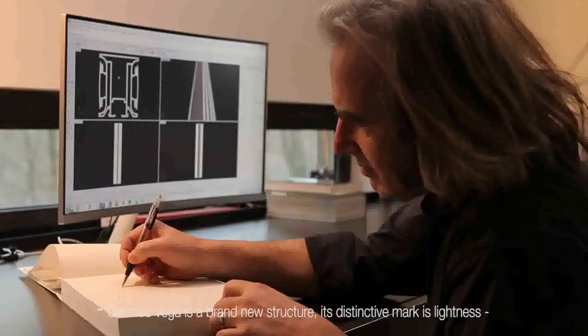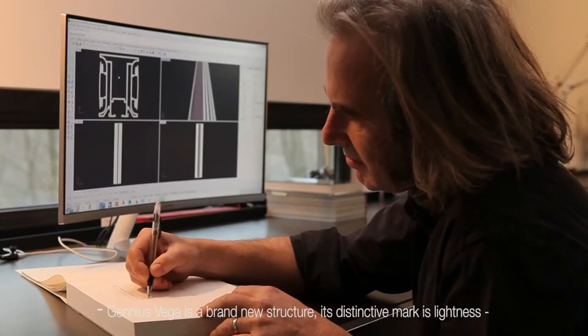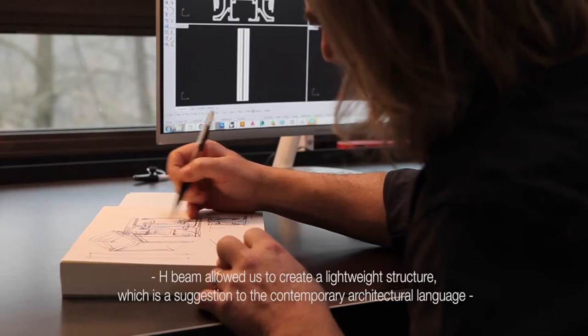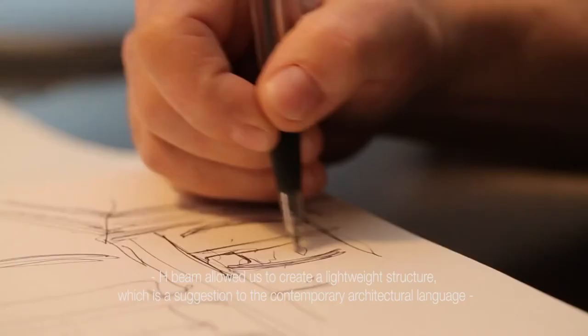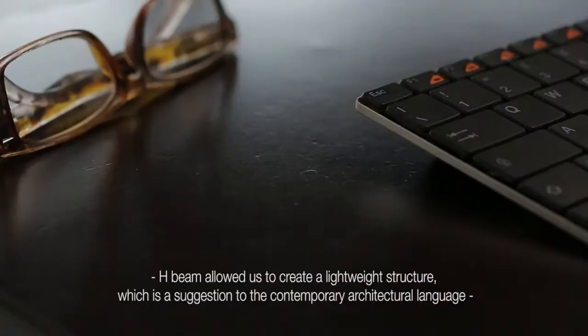A Pergola is a structure, and the purpose of the project was to give it lightness. The Trave H, in my opinion, allows us to get very light structures, situating in the context an element of the language of contemporary architecture.